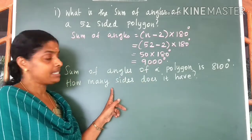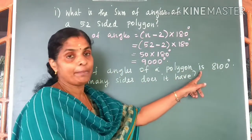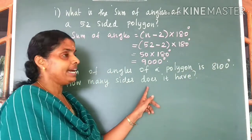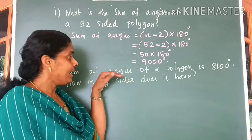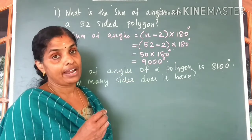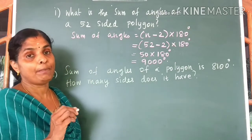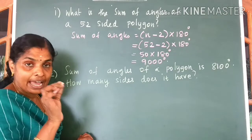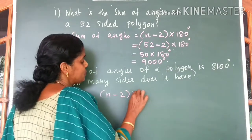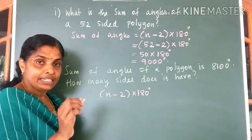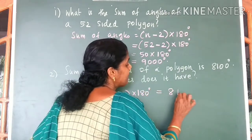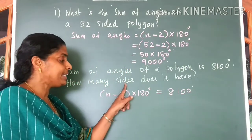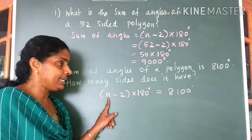Next question: the sum of angles of a polygon is 8100 degrees. How many sides does it have? We are given the sum of angles and asked to find the number of sides. We know the formula: (n minus 2) into 180 degrees equals 8100. Our task is to find n.